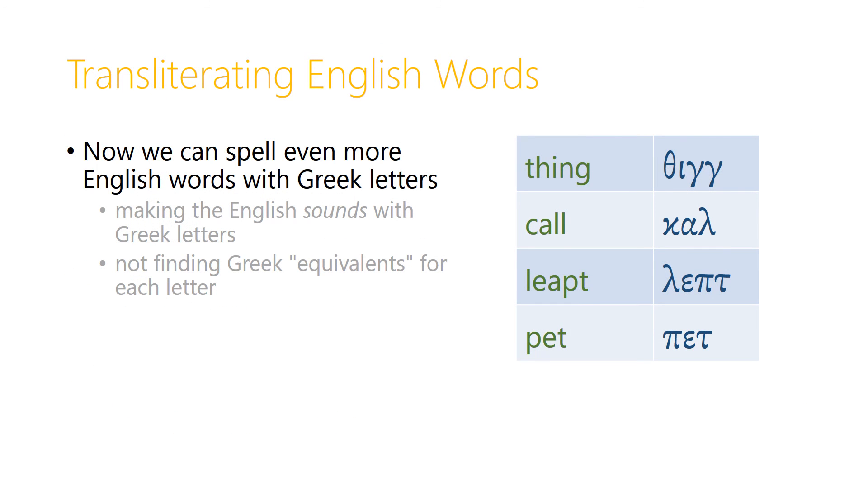Now we can spell even more English words using Greek letters. And remember, we're talking about making the English sounds with the Greek letters that make those sounds, not finding Greek equivalents for each letter. So to spell the word thing, we would use theta for the th, iota for the e vowel, and then for the ng at the end, we would put two gammas. And so theta, iota, gamma, gamma sounds like thing.